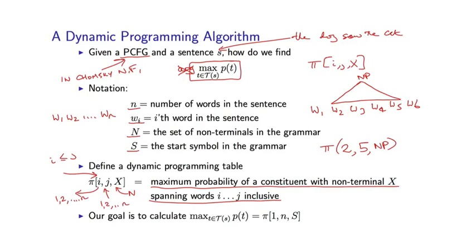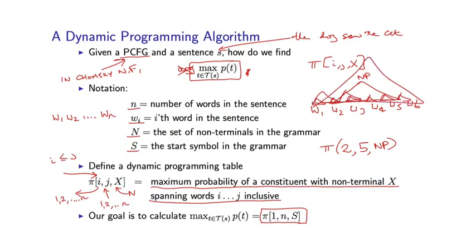Given that definition, remember that our goal is to find the highest score for any parse tree. By this definition, pi(1, n, S) is going to be the highest scoring parse tree with S at its root spanning words 1 through n inclusive. So if we can calculate this value, we've essentially solved the problem. We can actually calculate these pi values very efficiently using a dynamic programming method, using a recursive definition where we initially build up pi values for small segments and gradually get bigger until we have the pi value for the entire sentence.